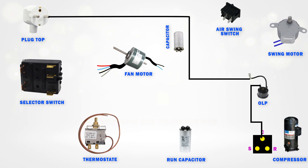Next, we give neutral to the swing motor. Then, we connect neutral to the fan motor. To do that, you first need to identify which wire is for neutral. You can also refer to the wiring diagram printed on the motor to help with this. So now, the neutral supply connections are done.